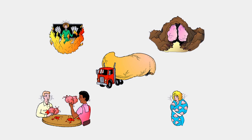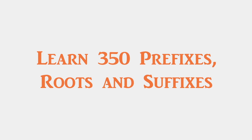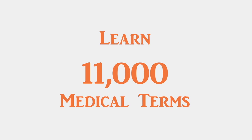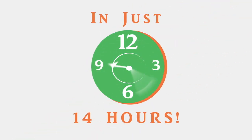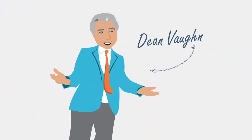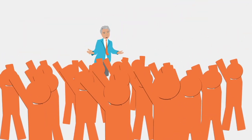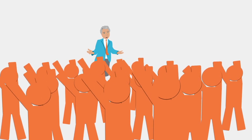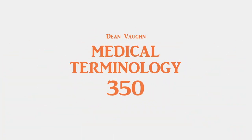We're talking some outlandish audio and visual associations here. Using the Dean Vaughan program, you'll learn and remember the meanings of 350 prefixes, roots, and suffixes that combine to form over 11,000 medical terms — and you'll do it in as little as 14 hours. Once you start learning medical terminology with Dean Vaughan, you'll be able to break down the meaning of virtually any medical term. When Dean has taught these secrets to rooms full of students, people lose their minds. Experience Dean Vaughan Medical Terminology 350 for yourself — we will look at just five of the 350 medical elements taught in the course.